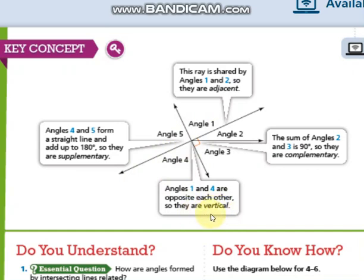What is special about vertical angles? They are congruent or they are the same. So angle 4 here and angle 1 here, they have the same measurement.